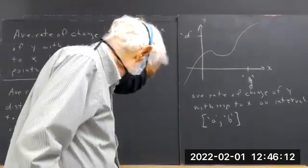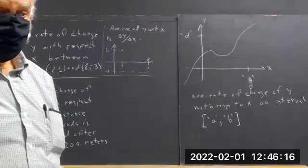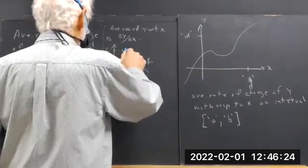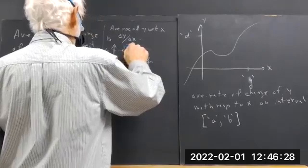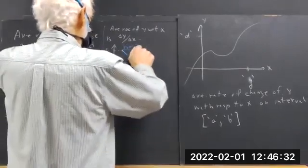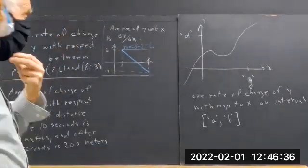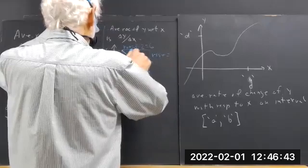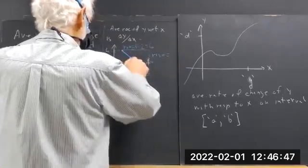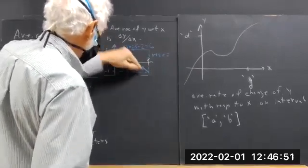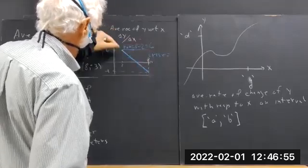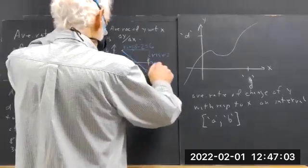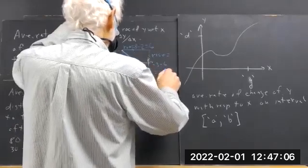Let's start the fundamental triangle. I talked about fundamental triangles last time. The run is 8 minus 2, which is 6. We're moving in this direction, from this point to this point. The rise is then this value minus this value, which is negative 3 minus 6, which is negative 9.